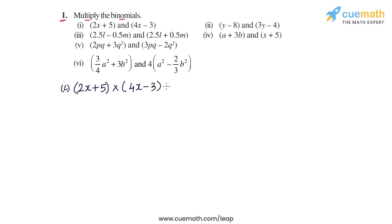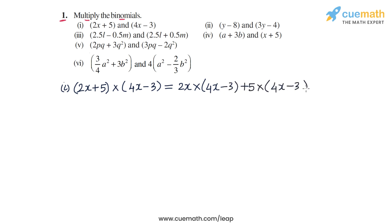We can write this as 2x into 4x minus 3, plus 5 into 4x minus 3. Basically, I'm taking the product of 2x with this bracket and the product of 5 with this bracket.